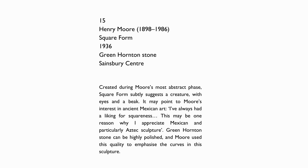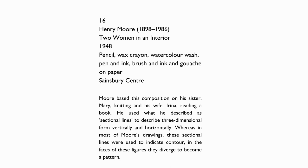Created during Moore's most abstract phase, Square Form subtly suggests a creature with eyes and a beak, and may point to Moore's interest in ancient Mexican art. He said: 'I've always had a liking for squareness — this may be one reason why I appreciate Mexican and particularly Aztec sculpture.' Green Horton stone can be highly polished, and Moore used this quality to emphasise the curves in this sculpture. Moore based this composition on his sister Mary knitting and his wife Irina reading a book.